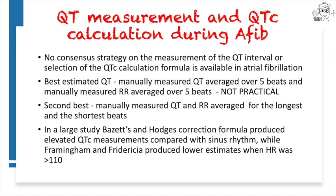How do we measure the QT interval and calculate QTc in the setting of atrial fibrillation? The answer is that we don't really know — there is no well-validated strategy. The most accurate way is to manually measure five different QT intervals and five different RR intervals, then average them. This may not be practical when monitoring multiple patients daily. The second-best approach is to manually measure the QT and RR interval for the longest and shortest beats and average those. All formulas perform less accurately in atrial fibrillation than in sinus rhythm, especially when heart rates are higher than 110.